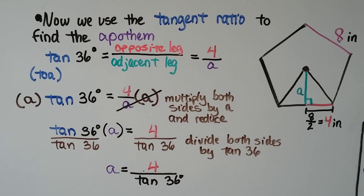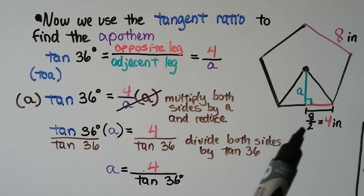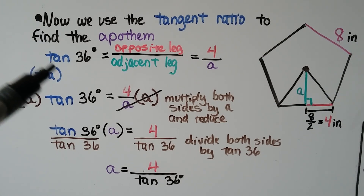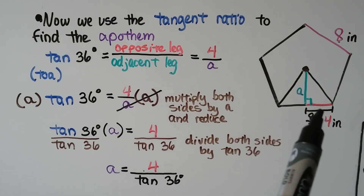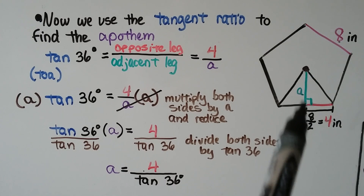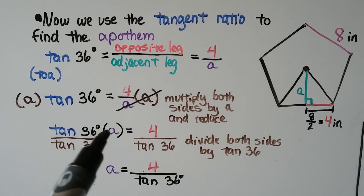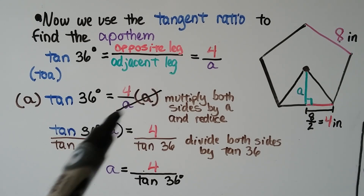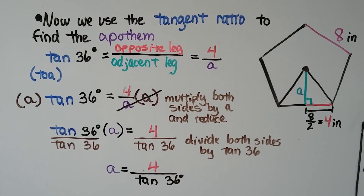We use the tangent ratio to find the apothem. Since the central angle is 72 degrees and we've split it with the apothem, they're each 36 degrees, so we find the tangent of 36 degrees. Using SOHCAHTOA, tangent equals the opposite leg over the adjacent leg — that's four over our apothem. We multiply both sides by a and divide both sides by tangent of 36, giving us: apothem = 4 / tan(36°).